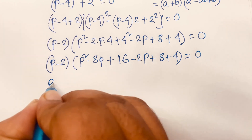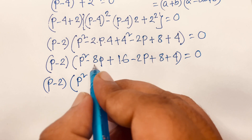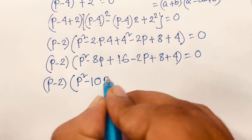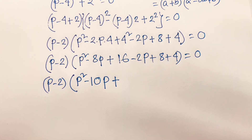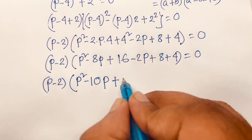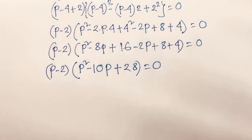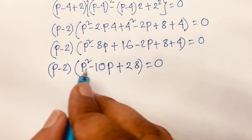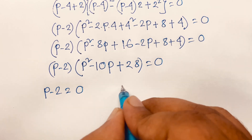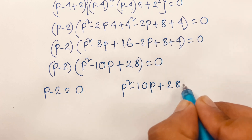So the equation becomes (p minus 2) times (p² minus 8p plus 16 minus 2p plus 8 plus 4) equals 0. Combining like terms inside the bracket: 16 plus 8 plus 4 equals 28, and minus 8p minus 2p equals minus 10p. This gives (p minus 2)(p² minus 10p plus 28) equals 0.